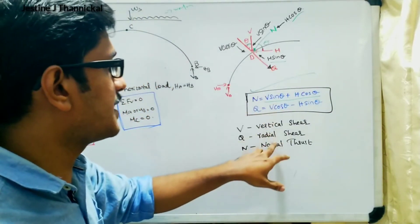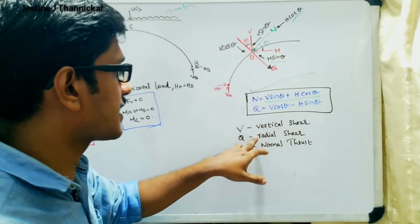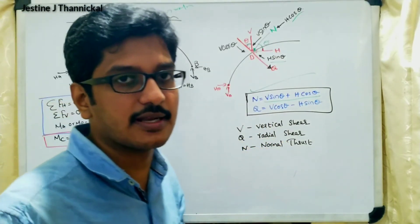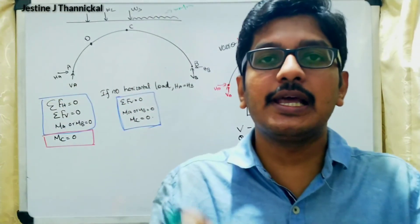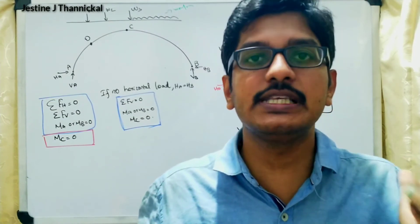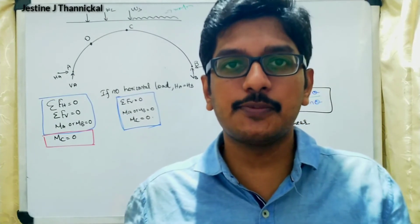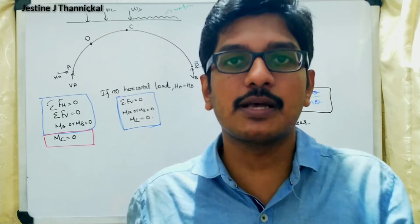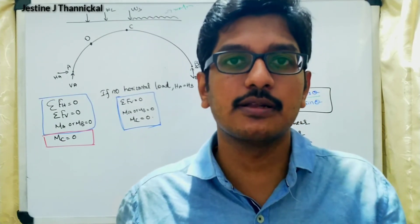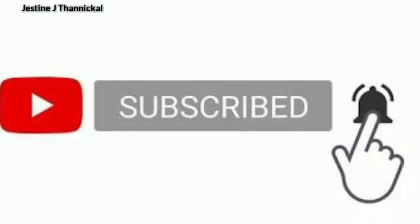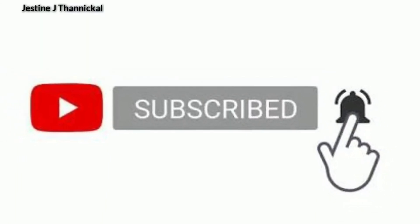So these are the important equations. That is, capital N means normal thrust and capital Q means radial shear. If you want to analyze a problem related to three-hinged arches, both these equations are very important. So with this we will end today's session and we will see some problems in the next section. Thank you all.